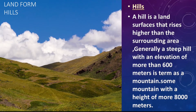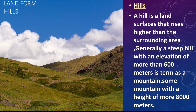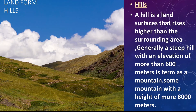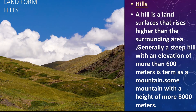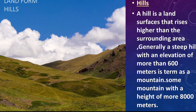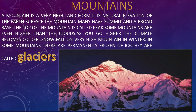A hill is a land surface that rises higher than the surrounding area. Generally, a steep hill with an elevation of more than 600 meters is termed as a mountain. Some mountains have a height of more than 8,000 meters. A mountain is a very high land, a natural elevation of the Earth's surface. The mountain may have a summit and a broad base.